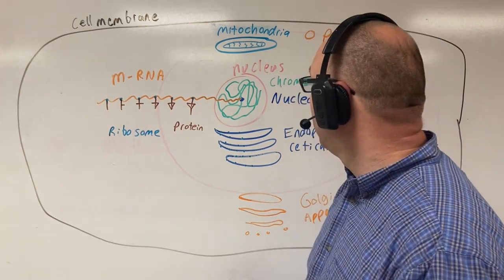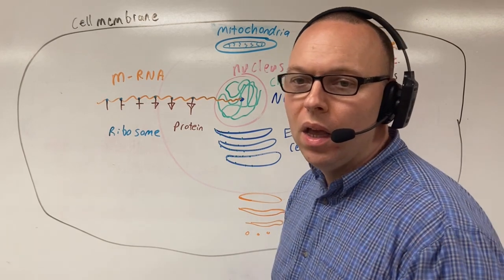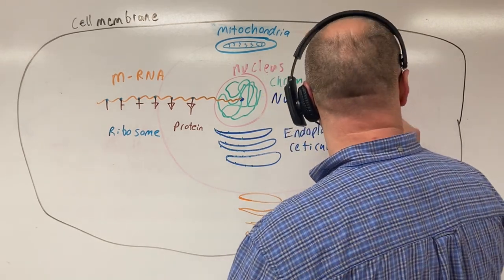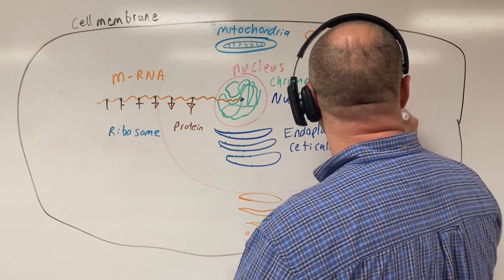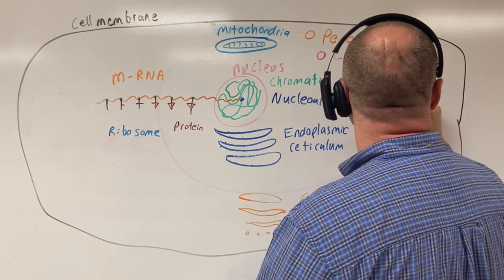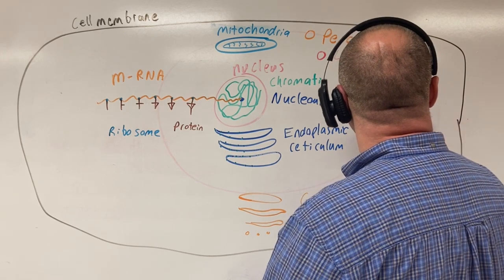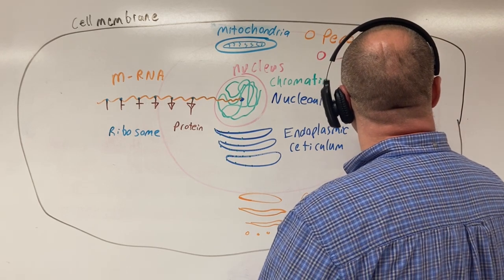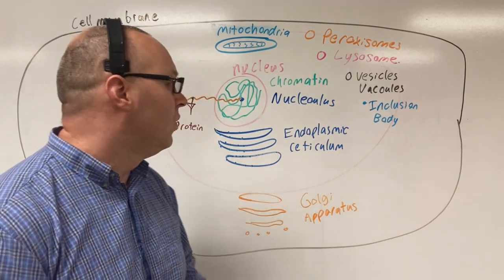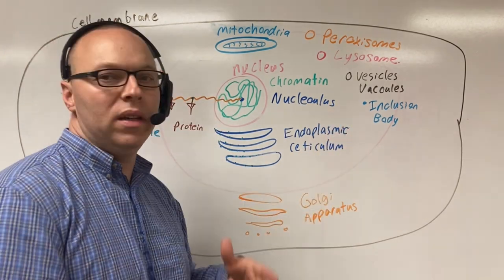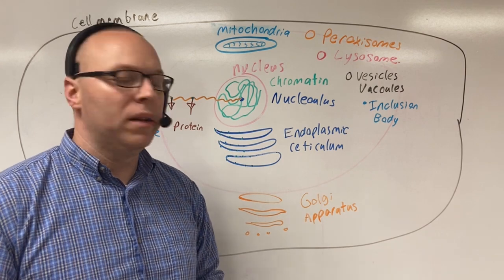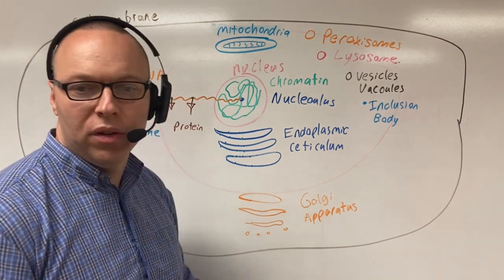The next structure is just a little dot here — this is an inclusion body. Sometimes we don't need to put things in a bag, so we just have it floating within our cell. An inclusion body clumps stuff within our cells.